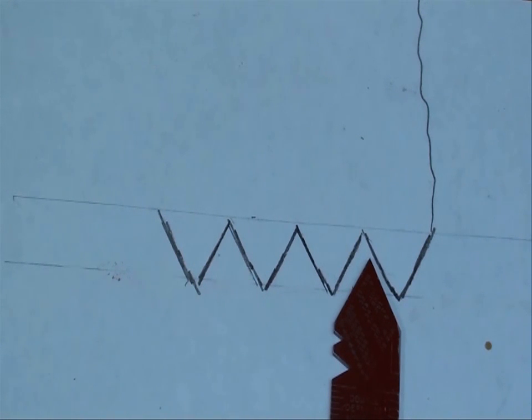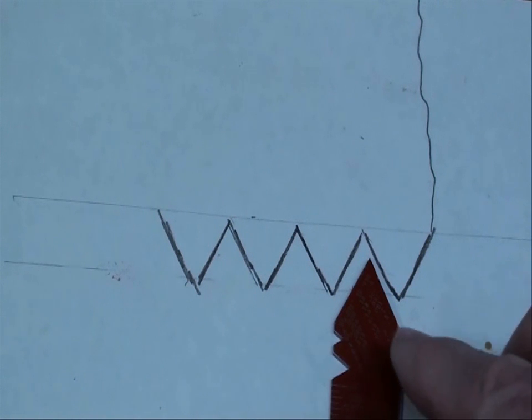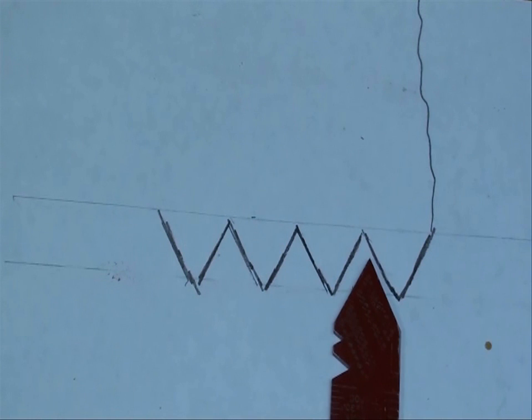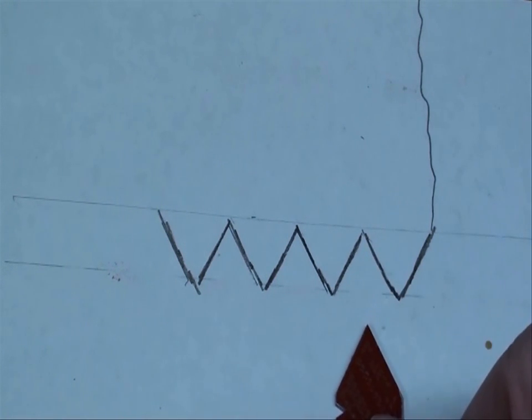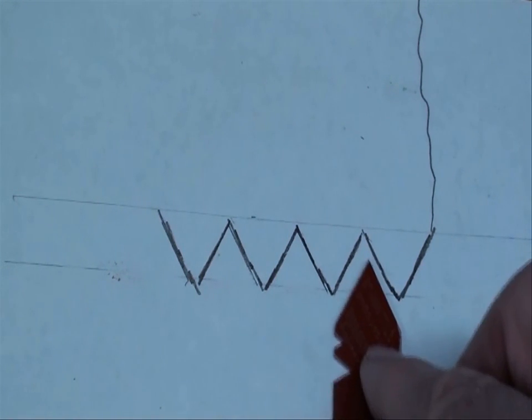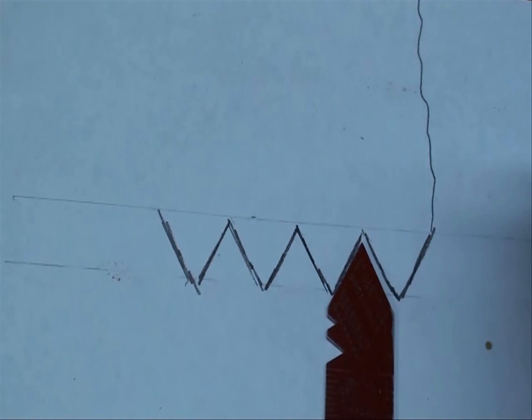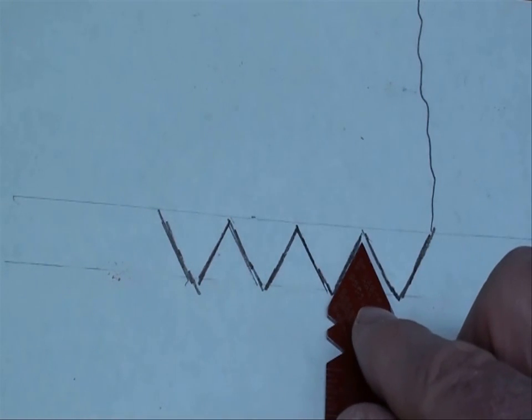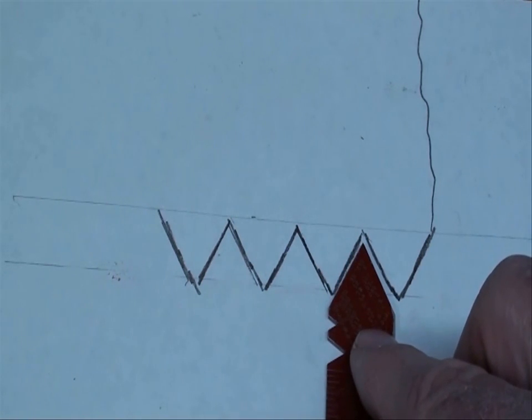Another thing that happens all the time to people that are threading is they lose their place. By that, I mean they make some error and the tool no longer lines up with the thread. If you haven't already ruined the thread, you can realign it, and I'm going to show you how on the lathe in a moment.